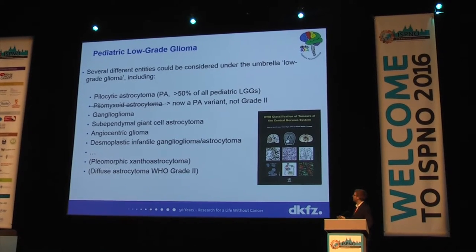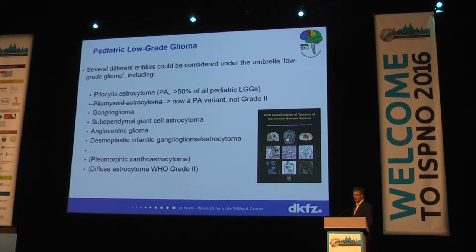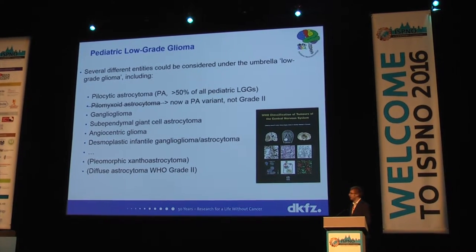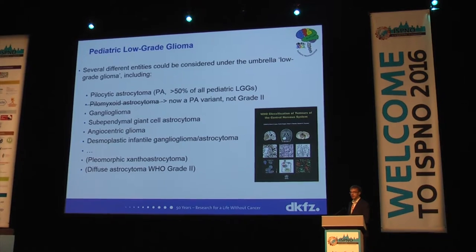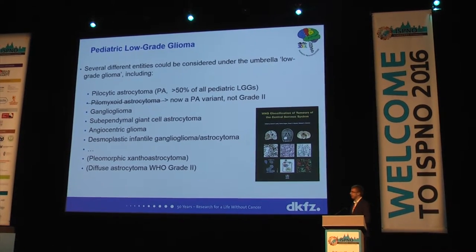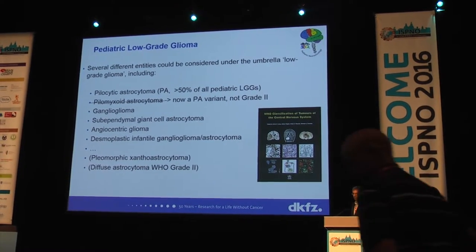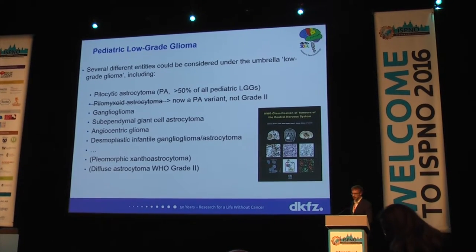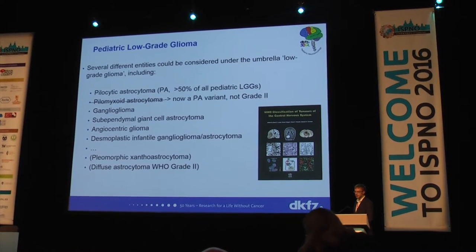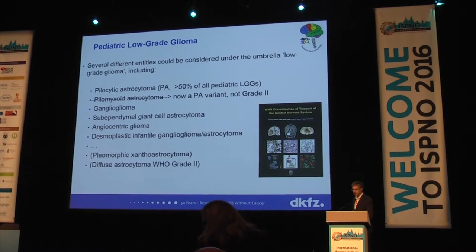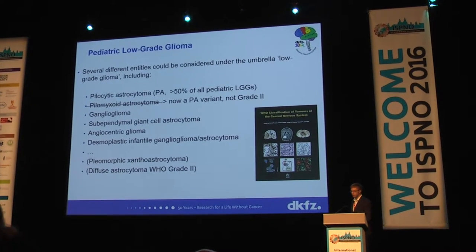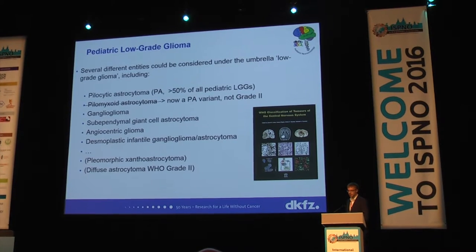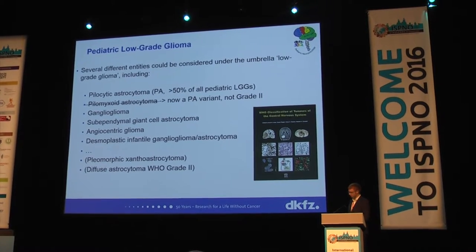The majority of them are pilocytic astrocytoma and pilomyxoid astrocytoma, which in the latest WHO classification is now considered a variant of PA rather than a separate entity, and these are no longer considered to be grade two. And then we have things like ganglioglioma, the SAGAs, angiocentrics, and then things which I think should not be considered true low-grade glioma in a pediatric sense — things like pleomorphic xanthoastrocytoma and the rarer diffuse astrocytomas.